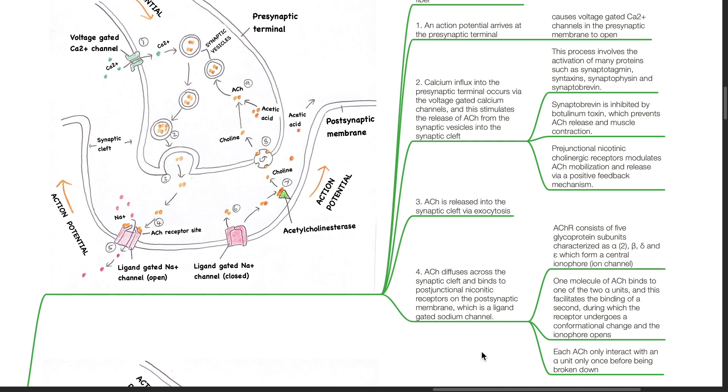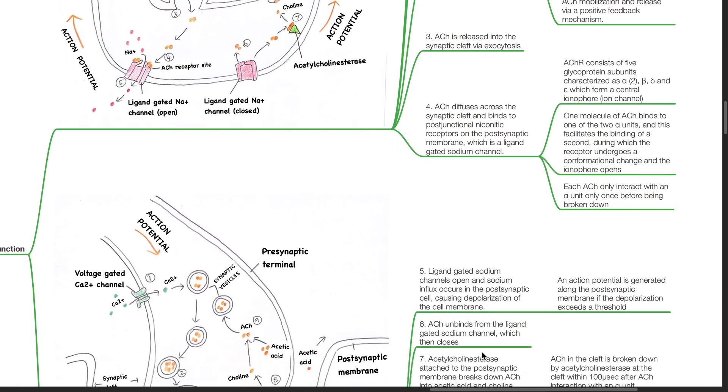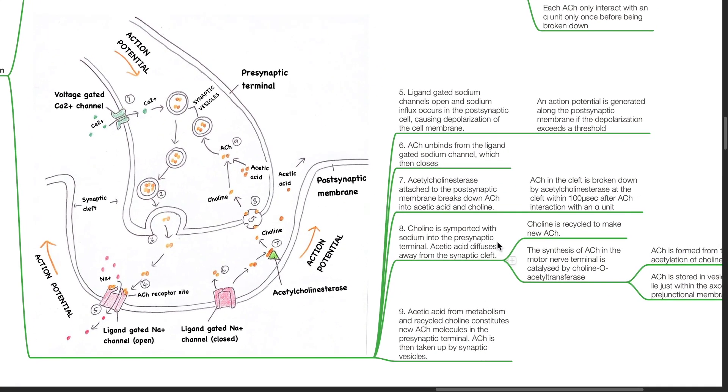Each acetylcholine only interacts with an alpha unit once before being broken down. Ligand-gated sodium channels open and sodium influx occurs in the postsynaptic cell causing depolarization of the cell membrane. An action potential is generated along the postsynaptic membrane if depolarization exceeds a threshold.